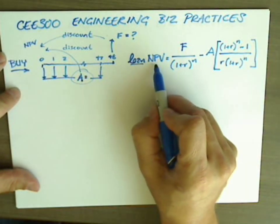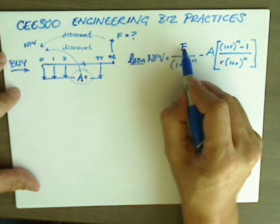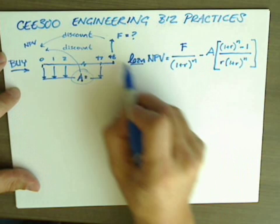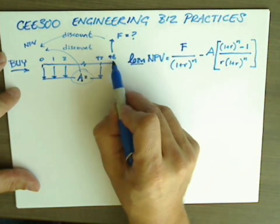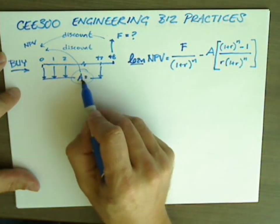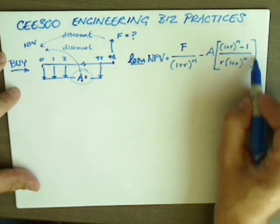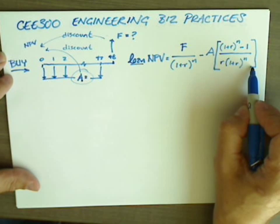Recall from the last video that the net present value of the loan option is the discounted value of the future payment, whatever F is, whatever the value of the car is at the end of four years. And then here's the monthly payment,